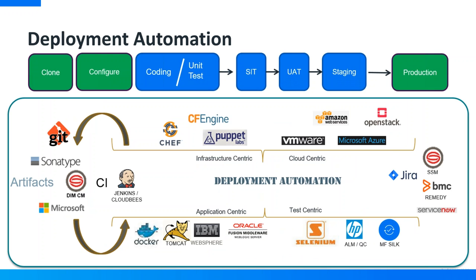Deployment Automation vient avec une centaine de plugins à disposition. Ces plugins vous permettent de vous interfacer avec votre écosystème existant : VMware, Puppet, Chef pour l'infrastructure, Tomcat, WebSphere, Docker pour l'applicatif, et des solutions de testing HP Micro Focus, Silk, ainsi que des plugins pour récupérer vos artefacts dans des repositories tels que Git, Nexus, TFS.